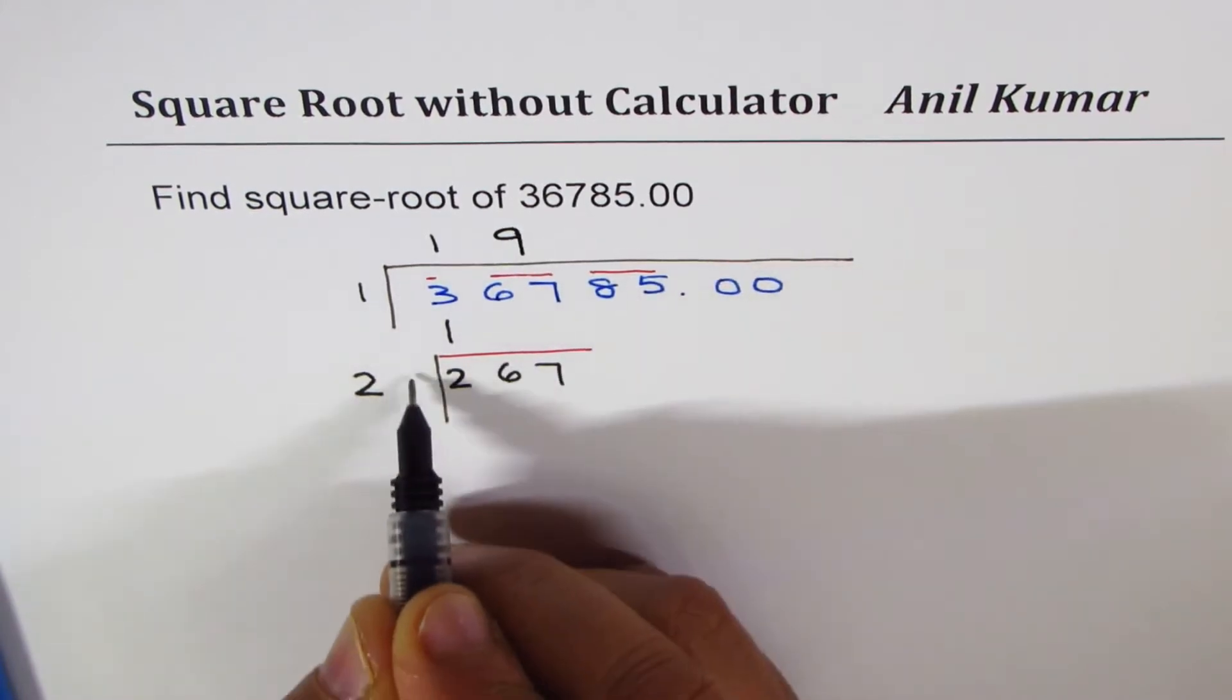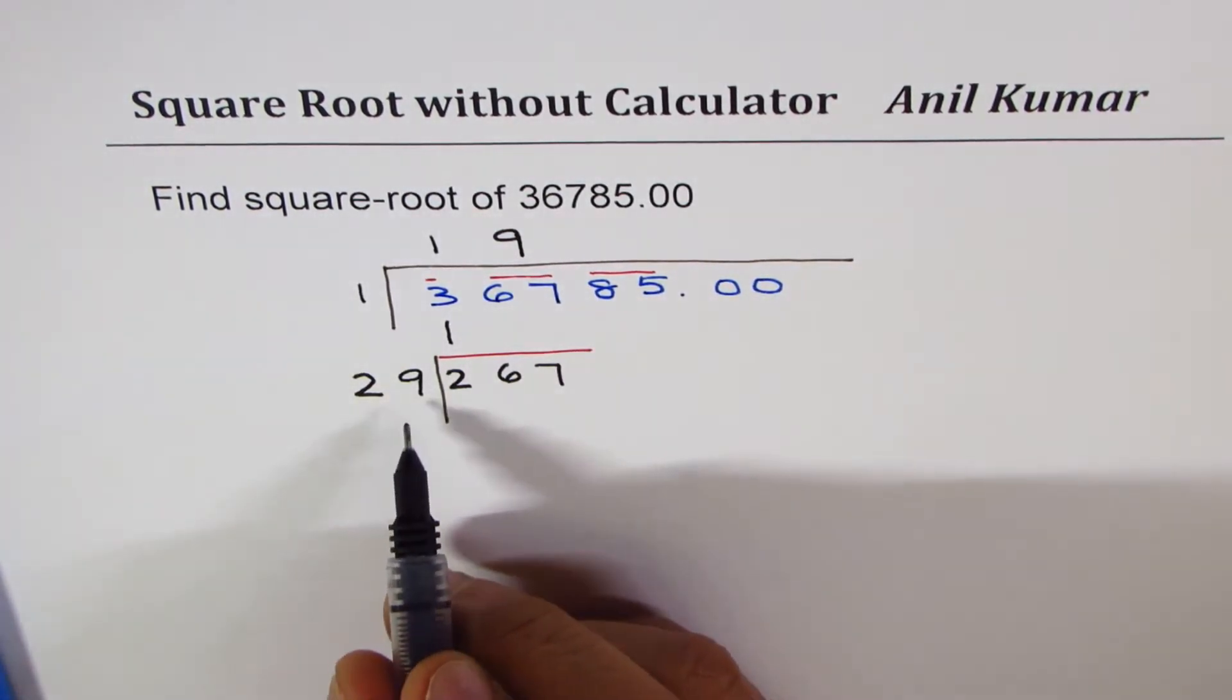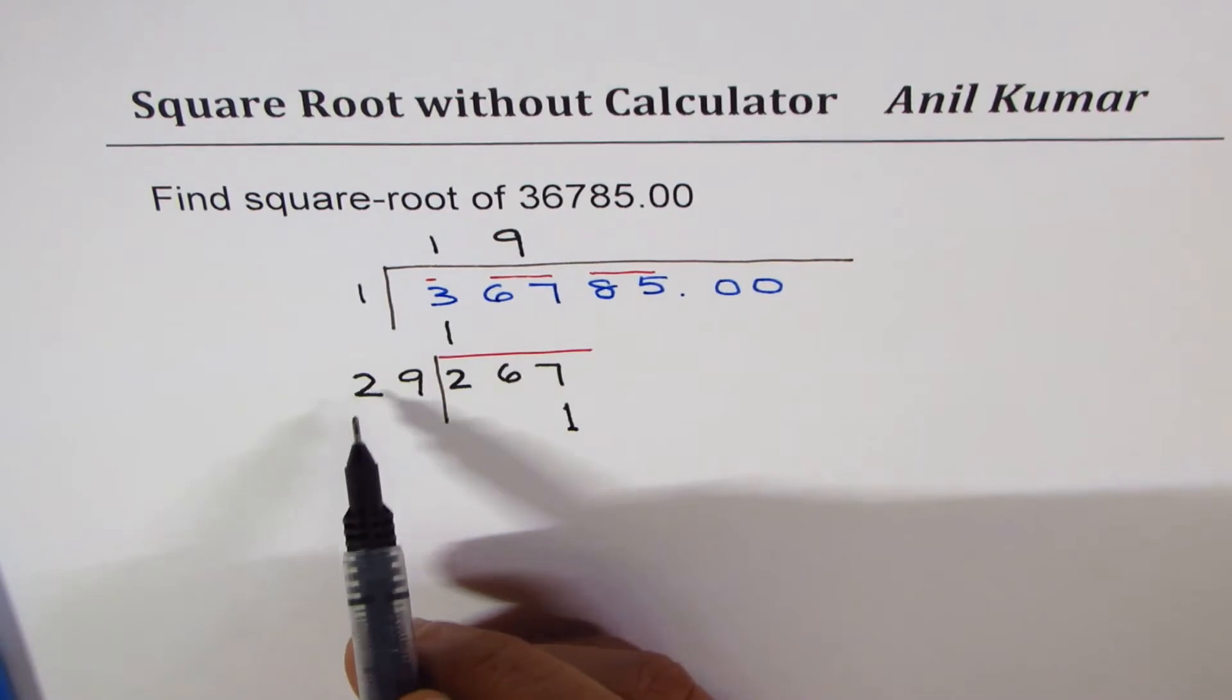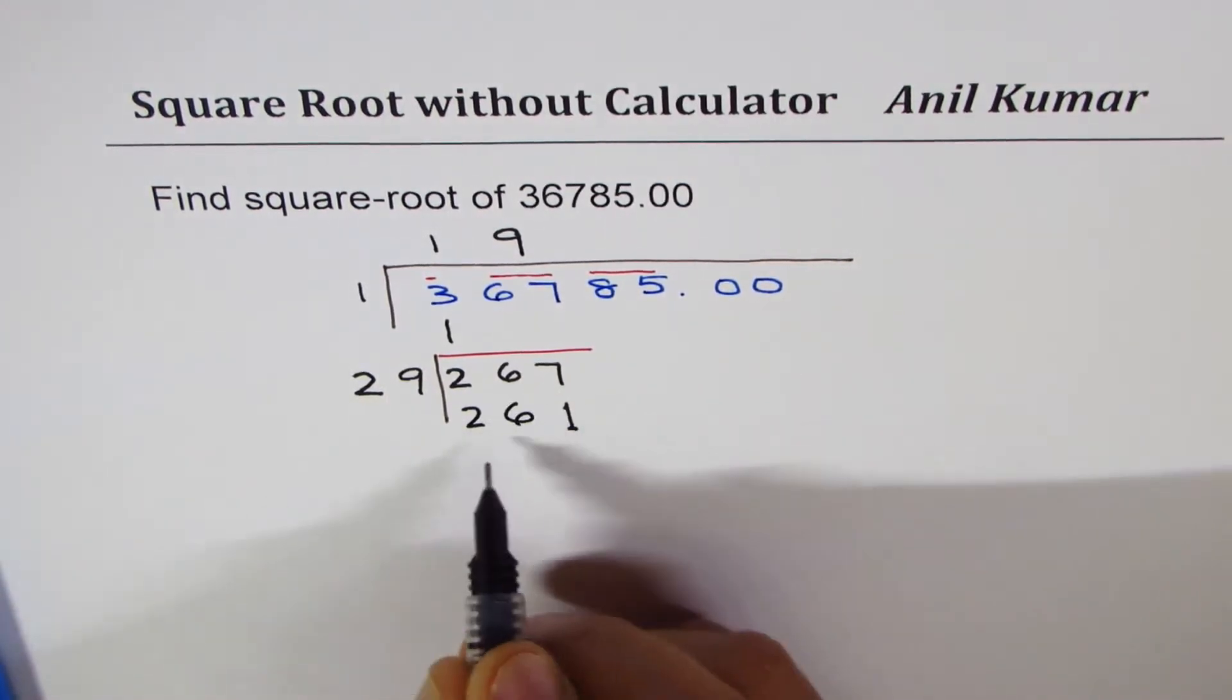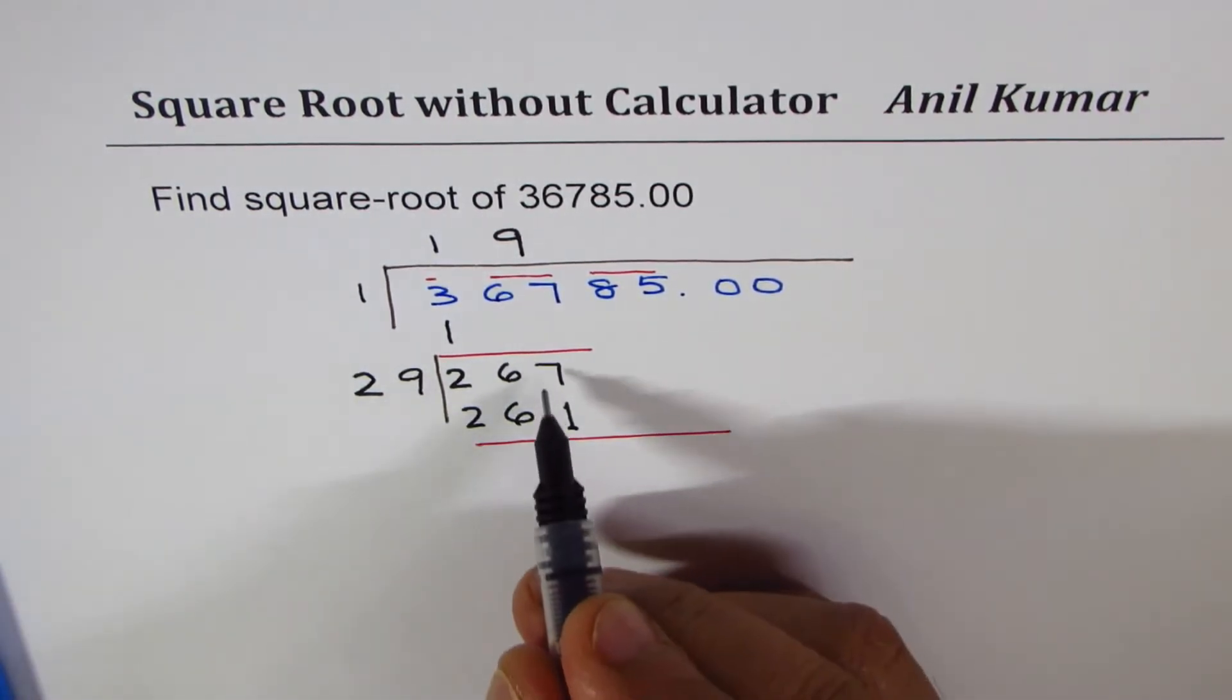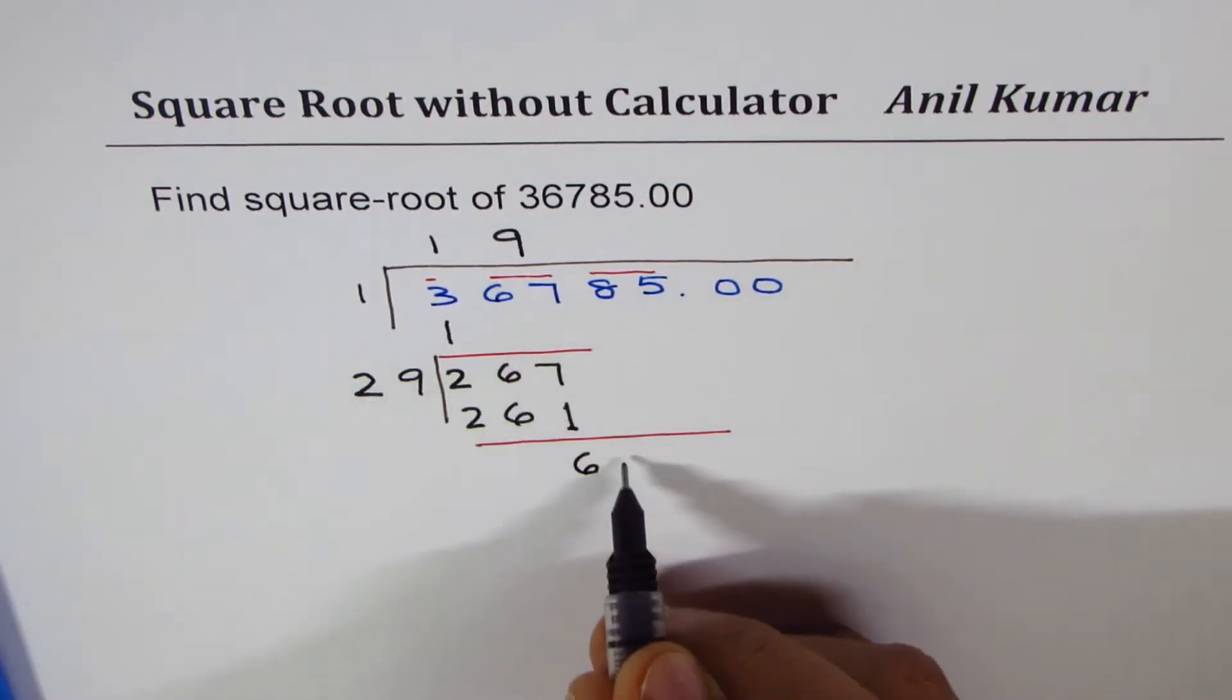Nine here, nine here. You have to write the same number in both positions. That is the key. Nine times nine is 81, one eight. Nine times two is 18, 18 plus eight is 26. And that gives you, when you take away, seven minus one which is six. Bring down 85.